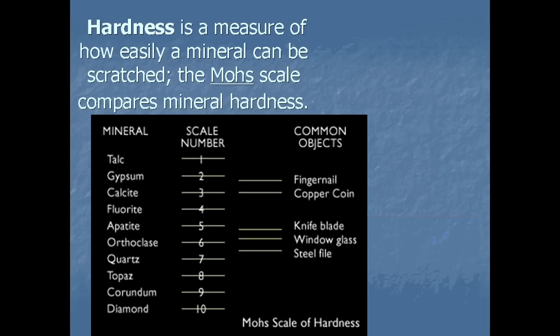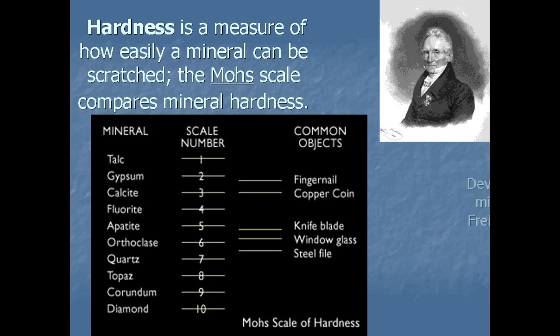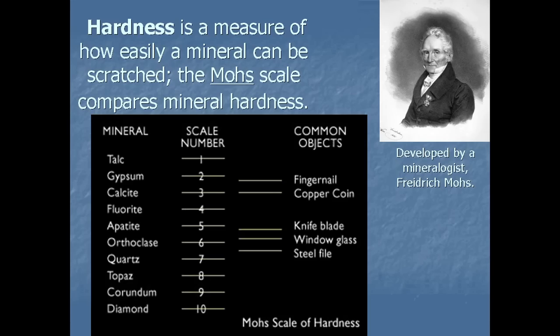Hardness is another way to test a mineral — it's how easily a mineral can be scratched. We use the Mohs hardness scale, developed by mineralogist Frederick Mohs. On the chart, talc has a hardness of 1, making it the softest mineral, while diamond has a hardness of 10, making it the hardest. The common objects on the far right of the chart are used to scrape minerals and test where they fall on the hardness scale.